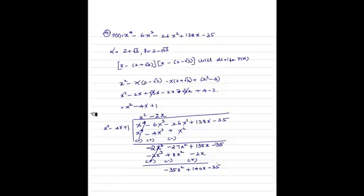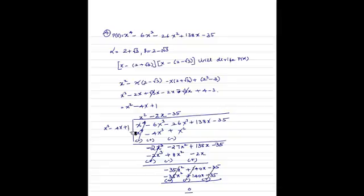Minus 35x squared divided by x squared gives minus 35. Multiplying minus 35 by (x squared minus 4x plus 1) gives minus 35x squared plus 140x minus 35. Subtracting, the remainder is 0. So the other two roots can be obtained by factorizing the quotient x squared minus 2x minus 35 equals 0.